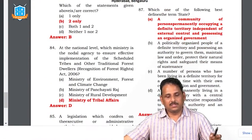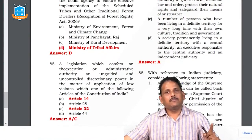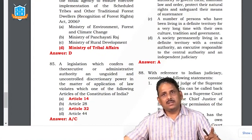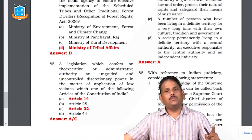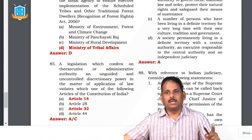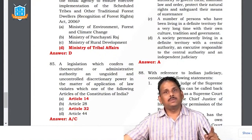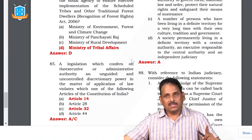Question 83: Forest Rights Act is under the Ministry of Tribal Affairs. Question 85 is debatable — if Parliament makes a law giving a lot of administrative discretion which can lead to misuse, it can be checked through Article 32. But under the rule of law you are not supposed to give unlimited authority. My answer here is C, though A and C are both marked with caution.